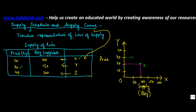Now the price increases to 30, and at this price the quantity supplied is 150. This becomes point Y. At point Z the price is 40 and the quantity supplied is 200.